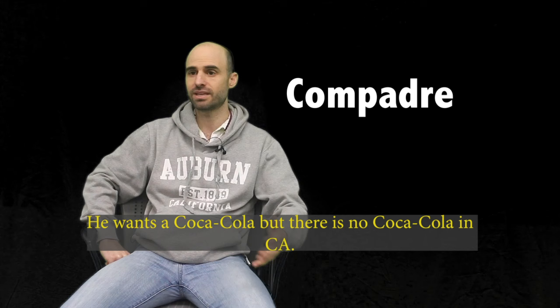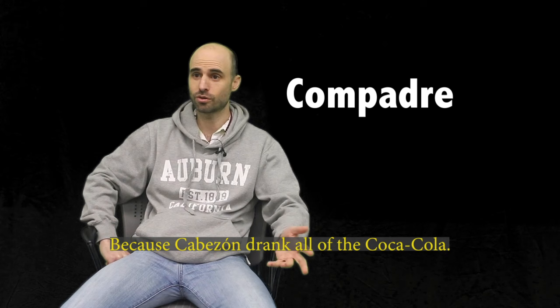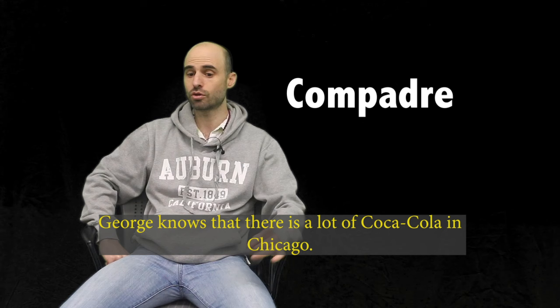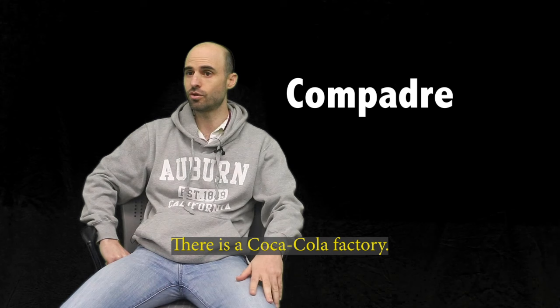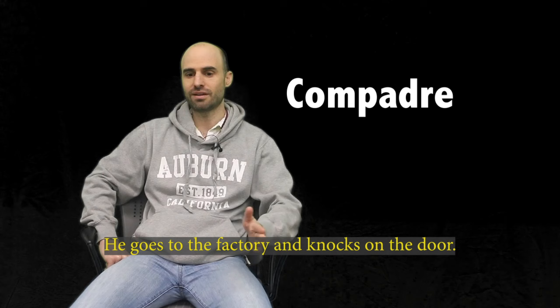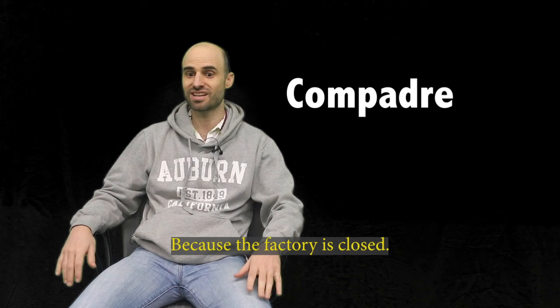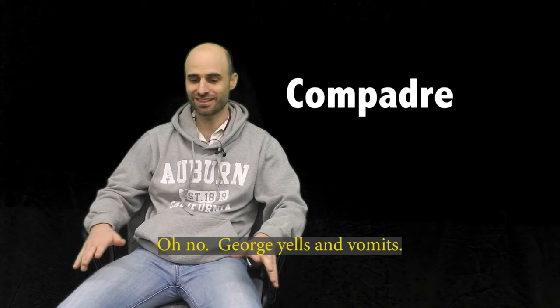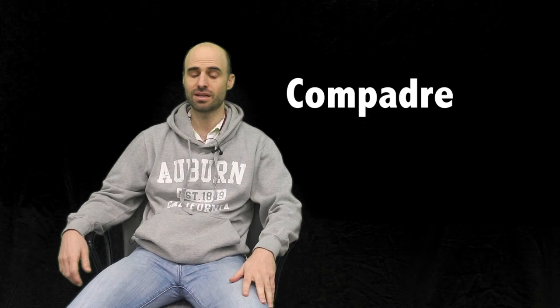Pero tiene un problema. Quiere Coca-Cola, pero no hay Coca-Cola en California porque Cabezón tomó toda la Coca-Cola en McDonald's. George sabe que hay mucha Coca-Cola en Chicago porque hay una fábrica allí, una fábrica de Coca-Cola. Así que George va a Chicago. Va a la fábrica, toca la puerta, pero nada. ¿Por qué? La fábrica está cerrada. Oh no, George grita, vomita.